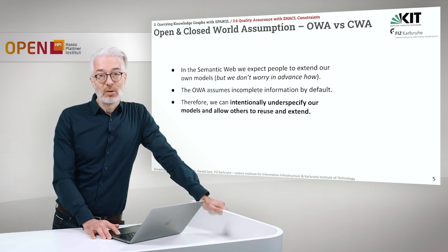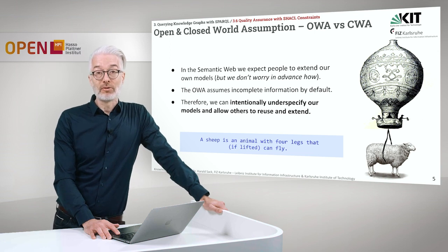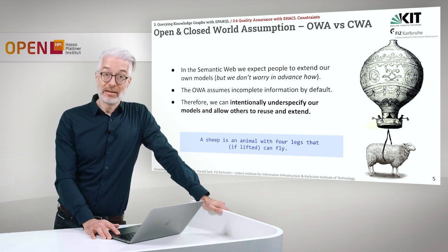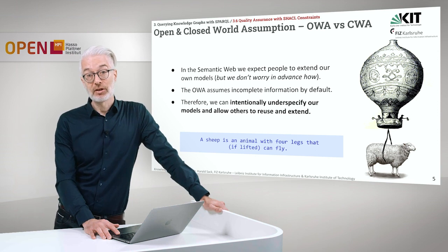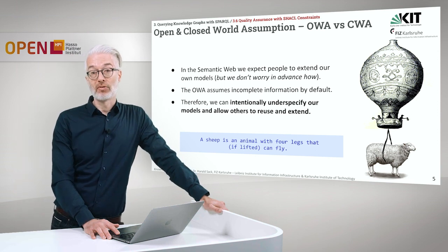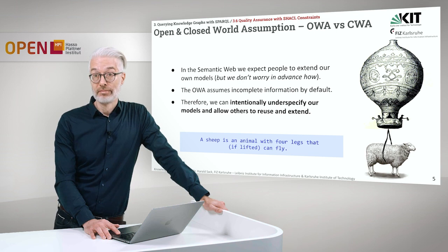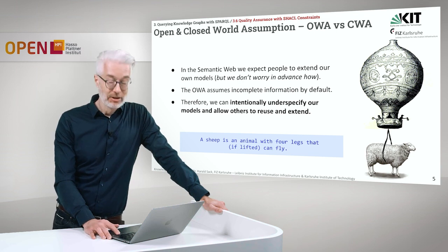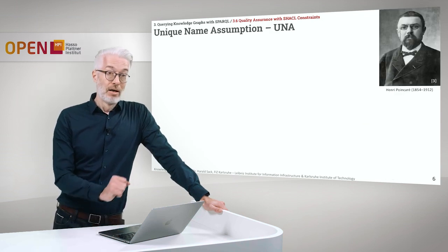Coming back to our sheep problem. We could now, of course, extend, under the open world assumption, our knowledge base in the sense that we say a sheep is an animal with four legs that, if lifted, can of course fly. It is as easy as that.